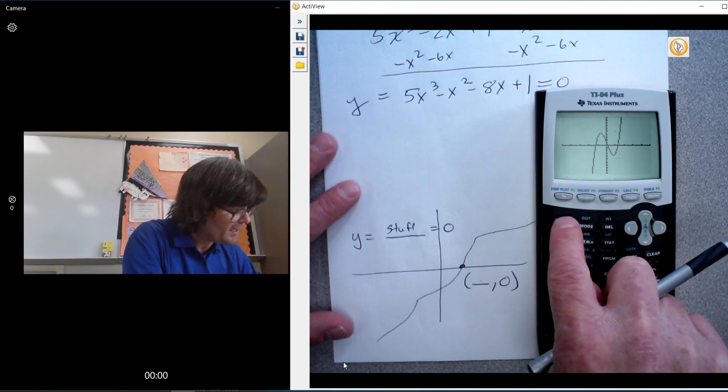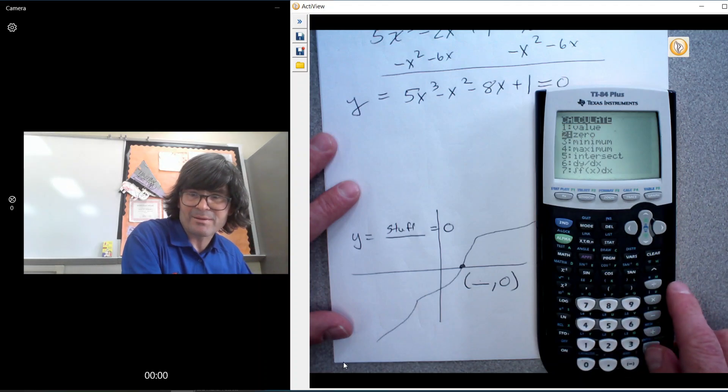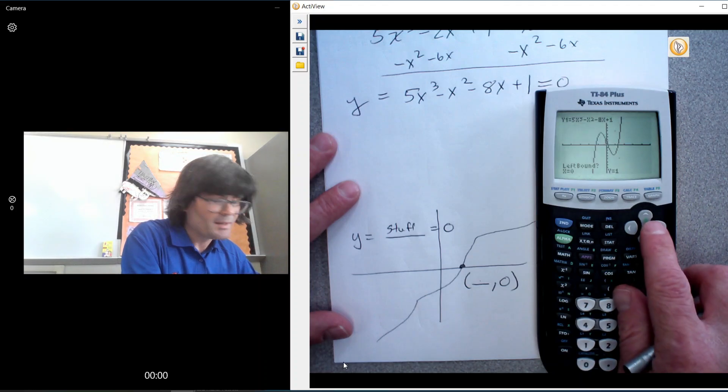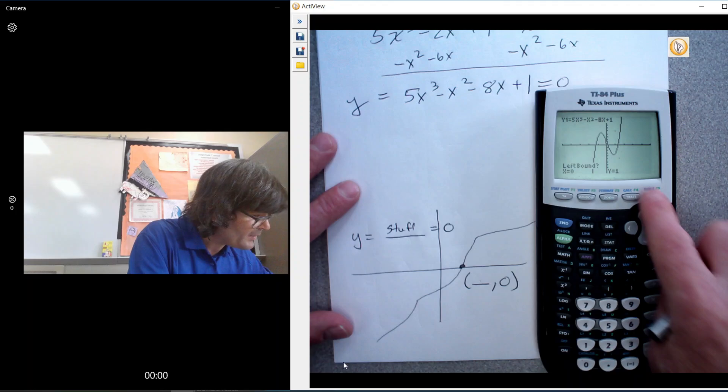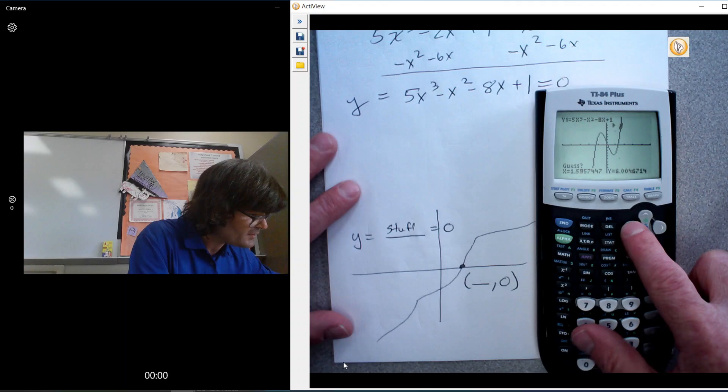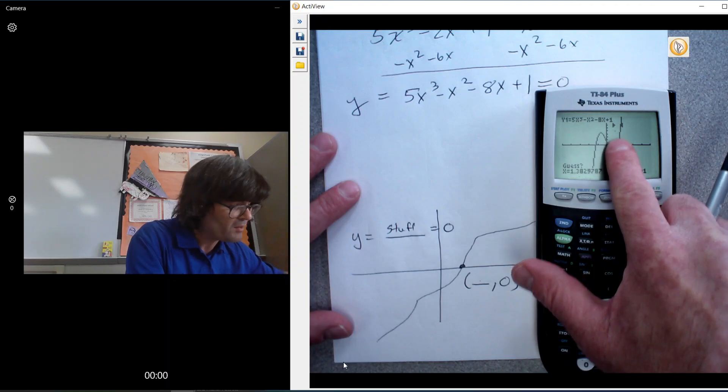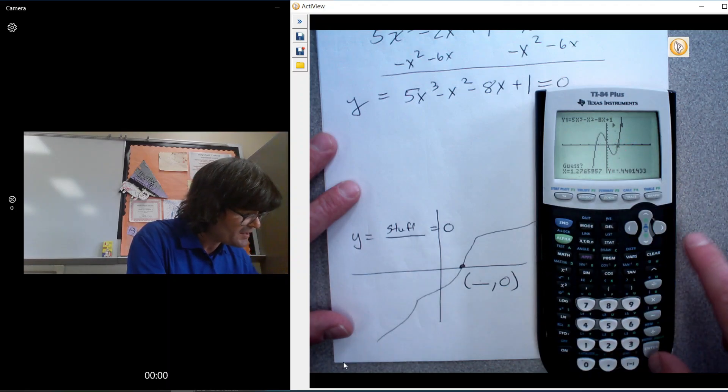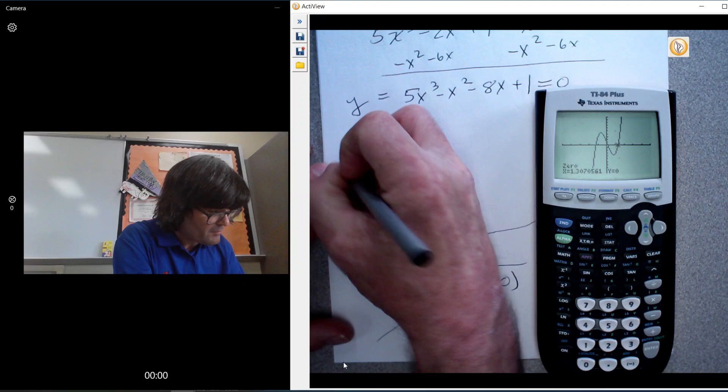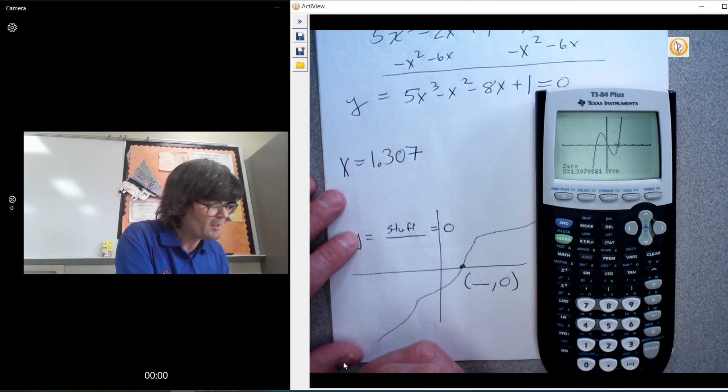I'm going to go to second calc right here. That's the calc menu, and it says find a zero. Hit enter. And so for this one, I'm going to – it says what's a left bound point. I'll pick right there. What's a right bound right there. And then I'll say guess. And what the calculator is about to do is take those arrows and look in this little interval and find a zero in that span. And it looks like – I'm going to write this down – 1.307.